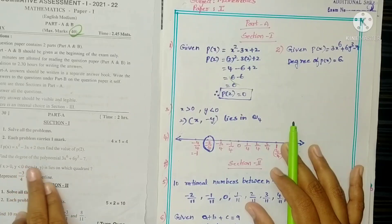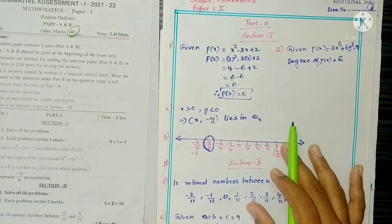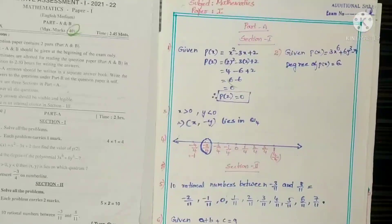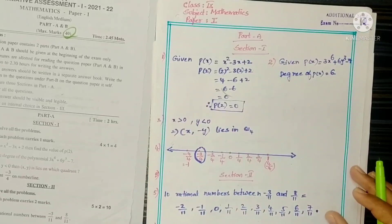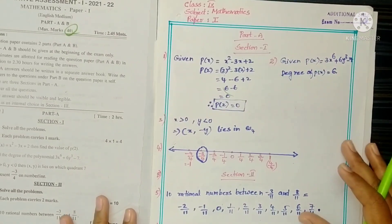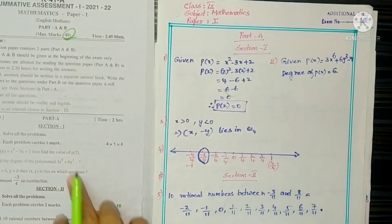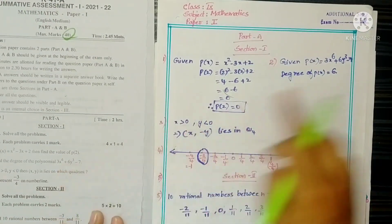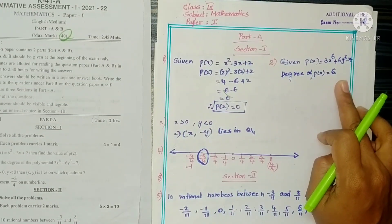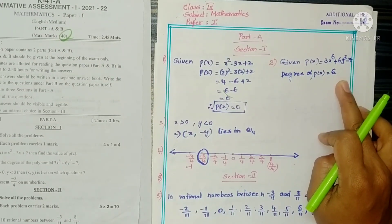Question 2: Find the degree of the polynomial. Degree means the highest power. The highest power here is 6, so the degree of p(x) is 6.